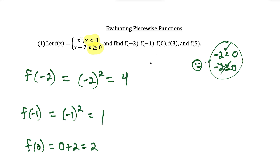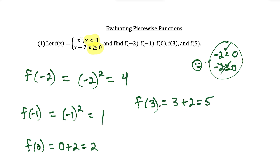For f of three, we ask where does x equals three belong. X equals three is greater than or equal to zero, so we plug three into the bottom piece: three plus two is equal to five. And for f of five, five is also greater than or equal to zero, so we plug into the bottom piece: five plus two is equal to seven.